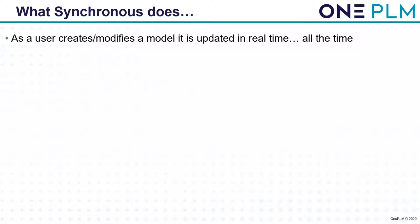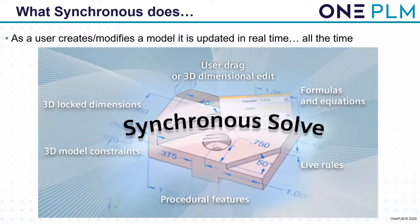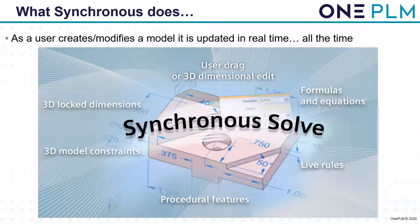So let's look at what synchronous does. As a user creates or modifies a model it is updated in real time — we call this the synchronous solve. That's actually where the name came from: a unique ability to synchronize a solve between rules, features, and geometry. As the user makes a change either by dragging a face or editing a dimension, only the affected geometry is updated. This synchronous solve manages modifications using key components such as 3D locked dimensions, live rules, and procedural features. Because of this localized solve, system performance during edits is very impressive.